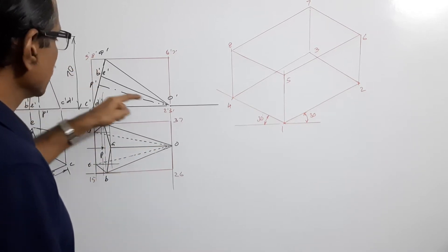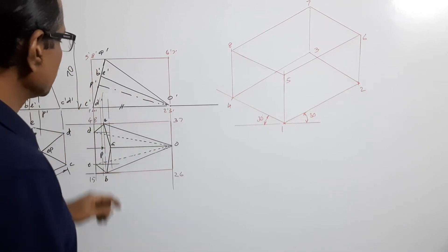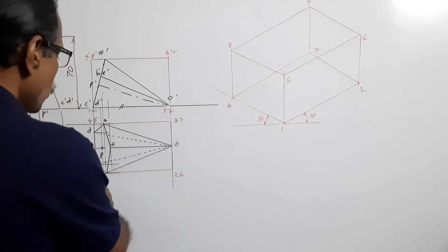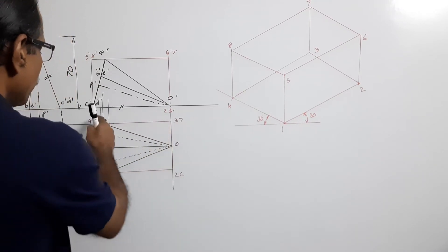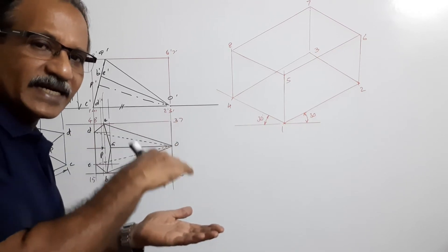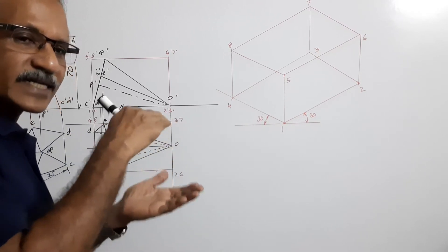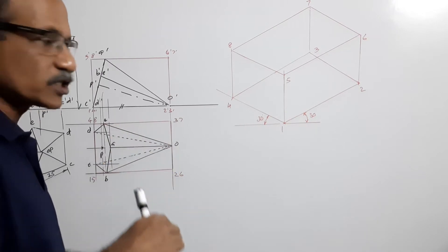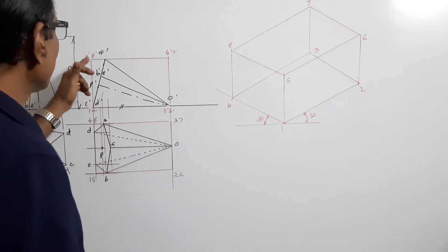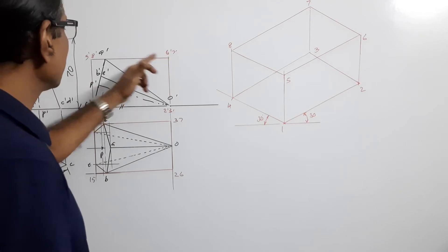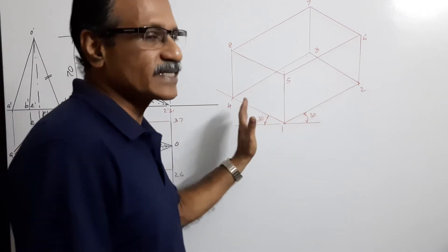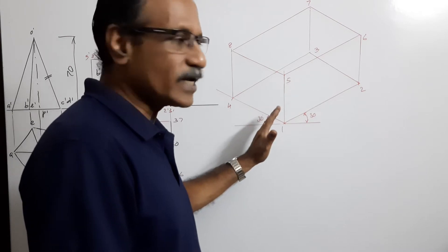Then inscribe it in a box — box 1 2 3 4 5 6 7 8 — in which the pyramid is contained. This is its elevation: 1 dash, 2 dash, 3 dash, 4 dash, 5 dash, 6 dash, 7 dash, 8 dash. Then draw the isometric axis at 30 degrees to the horizontal.